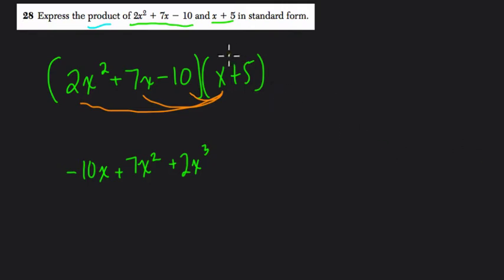Next we take 5. 5 times negative 10 is negative 50. 5 times 7x is 35x - you just multiply 7 and 5 and leave that x there. And then 5 times 2x squared is 10x squared.